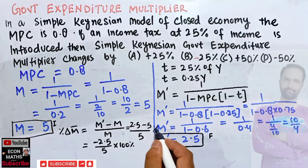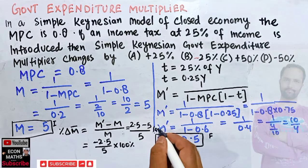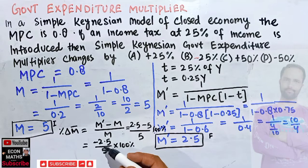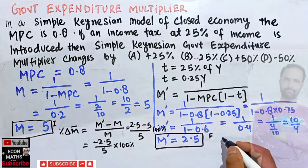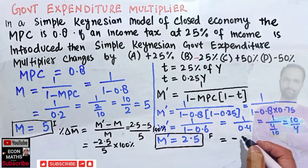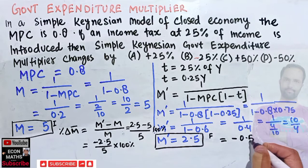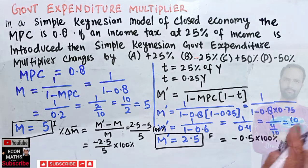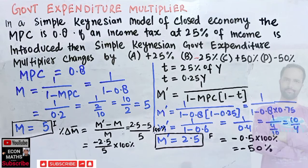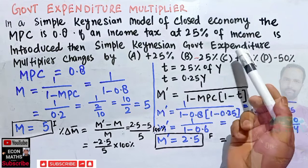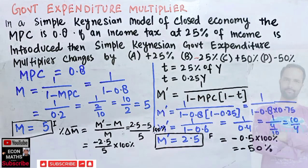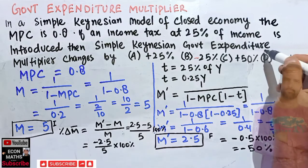Calculating this, minus 2.5 divided by 5 equals minus 0.5, and minus 0.5 times 100% equals minus 50%. So the simple Keynesian government expenditure multiplier changes by negative 50% — it decreases by 50% when the 25% proportional income tax is introduced.